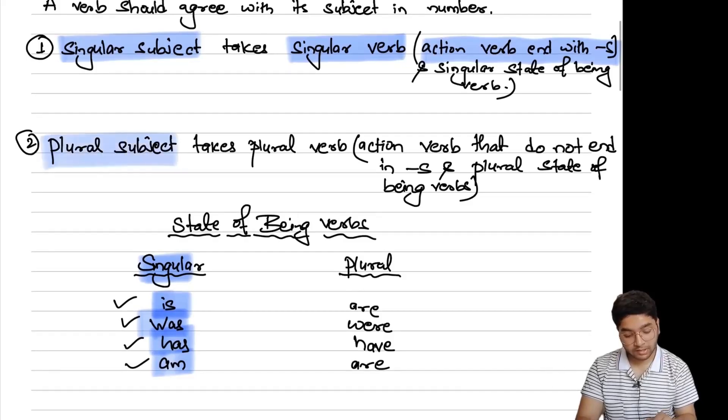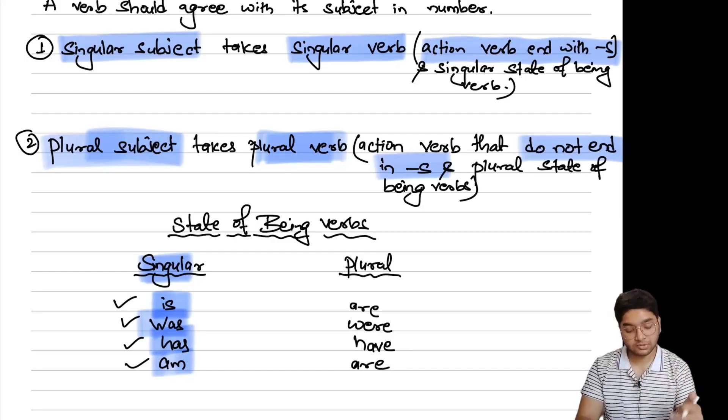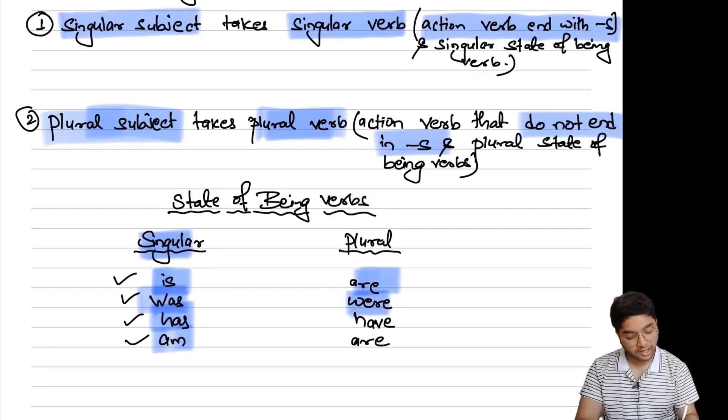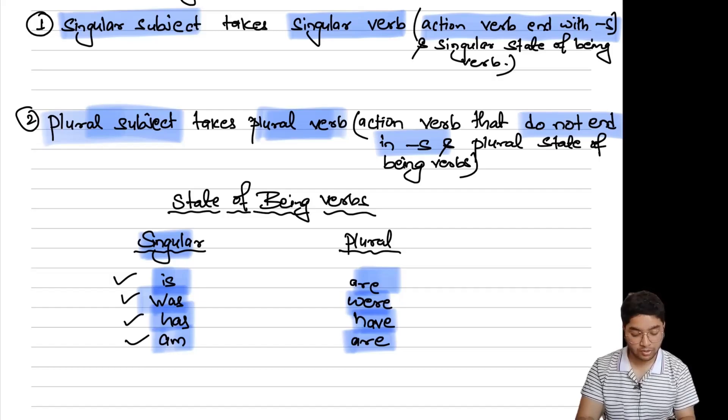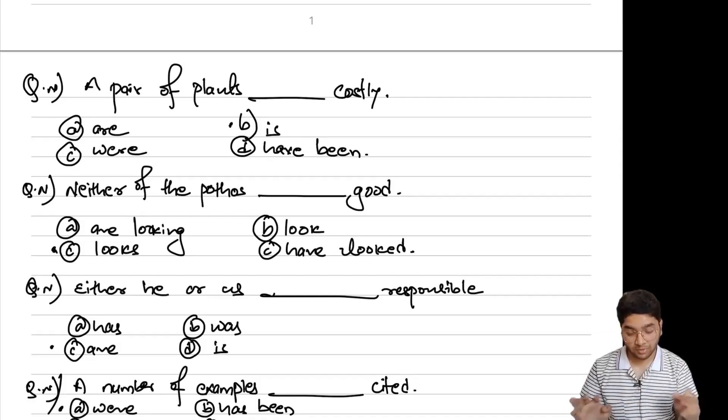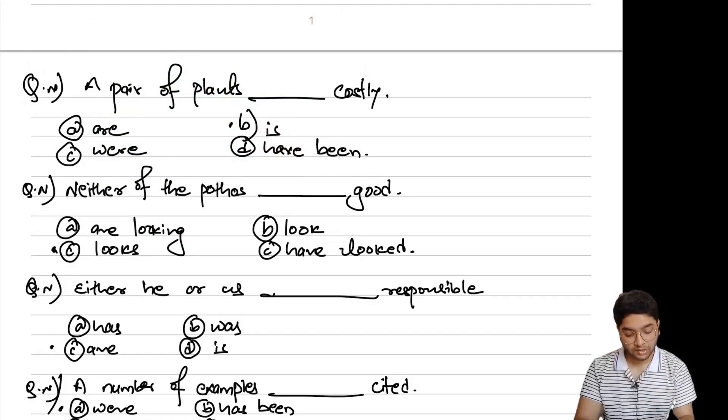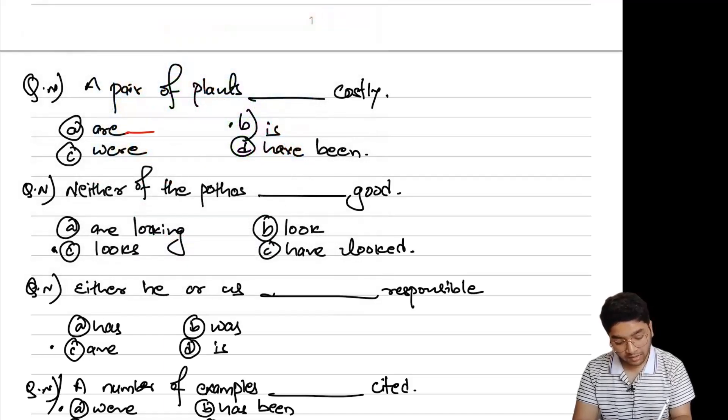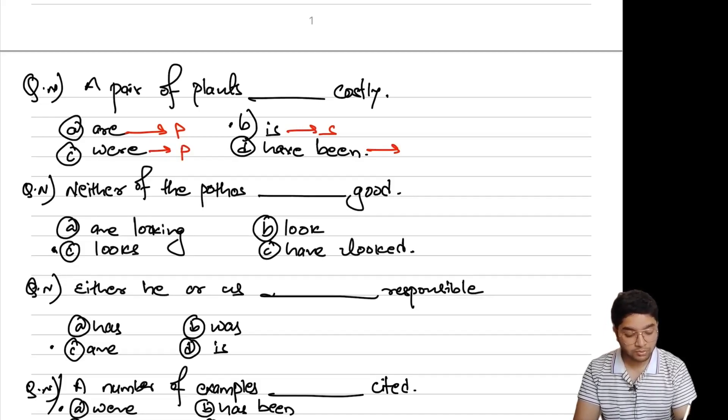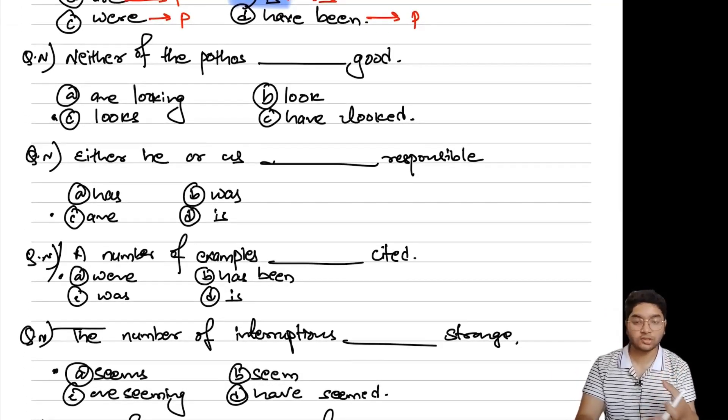Is is singular, and then the plural form is are. So we can do this question directly. The question is, option: are is plural, is is singular. Where is singular, has been, have been. Singular is singular.